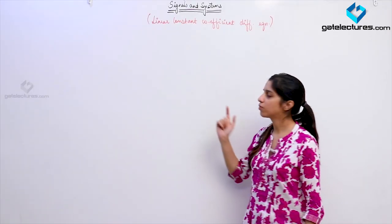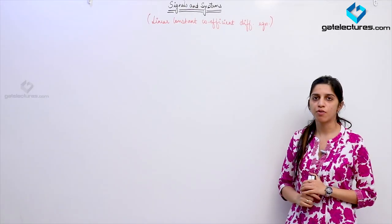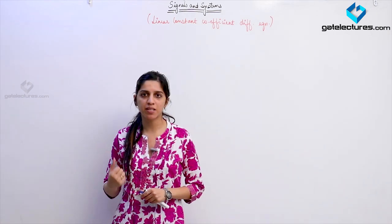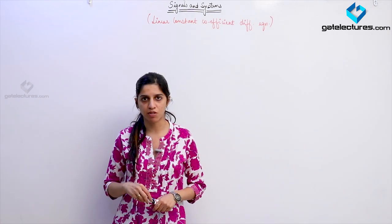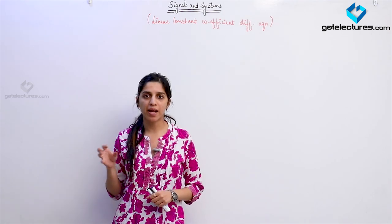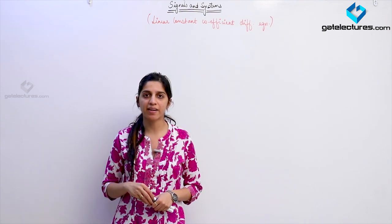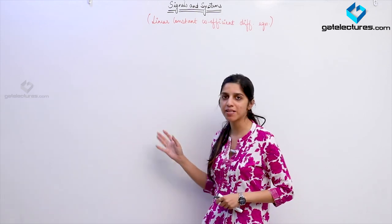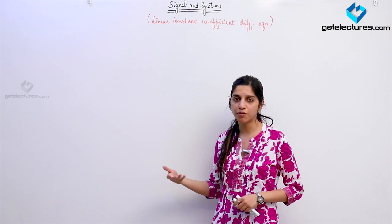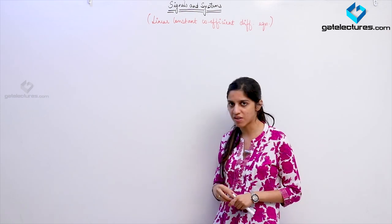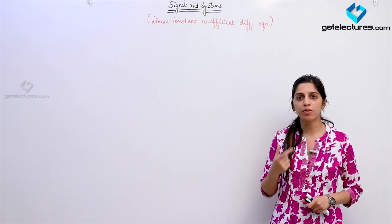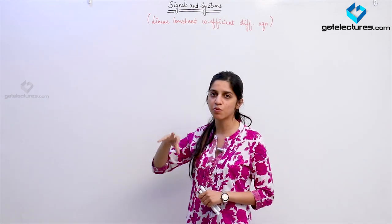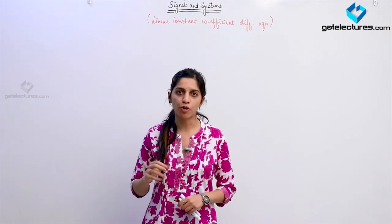Hello people. Today we are going to look at the concept of linear constant coefficient differential equation. We have already seen that one way of describing a system was using its impulse response — we applied a unit impulse signal and used the output to describe the system. Another way is using its transfer function. There is one more way: using a differential equation that relates the input and output of a system.